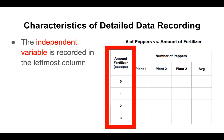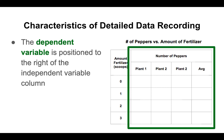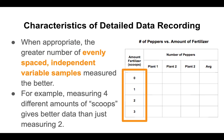The next thing is that when we set up our columns, we want to make sure that the independent variable is recorded in the leftmost column. In this case, the amount of fertilizer goes all the way to the left, and the dependent variable — number of peppers — is to the right of that. You'll notice there are a few columns there, which we'll talk about in a second. Also, it's important that we sample the independent variable as many times as possible, with evenly spaced values — more is better. For example, it's better to measure four amounts of fertilizer scoops rather than just two.